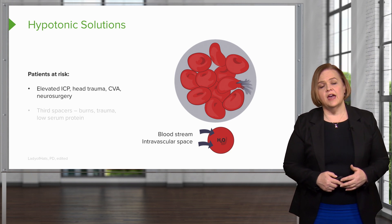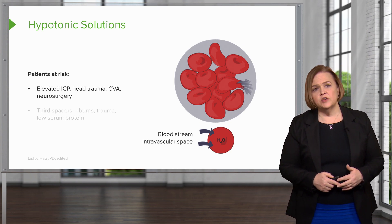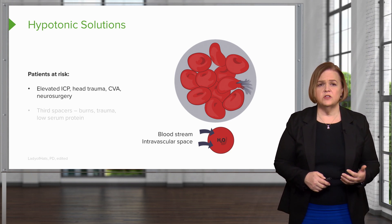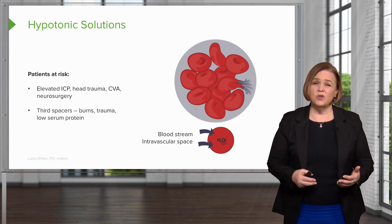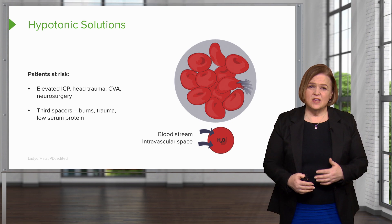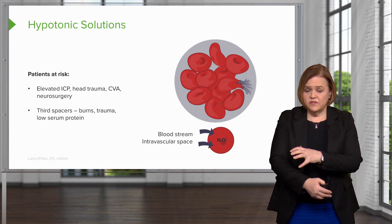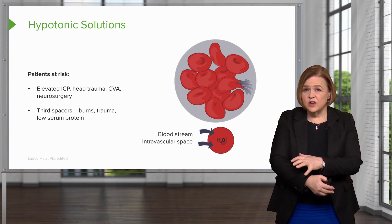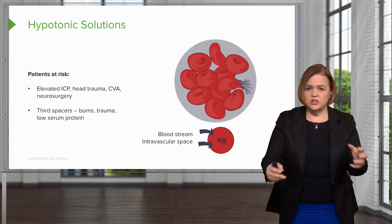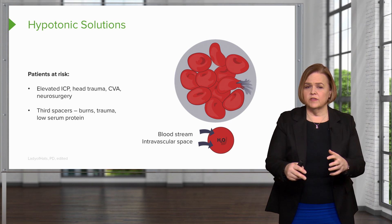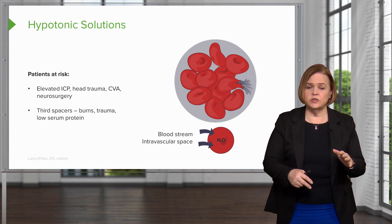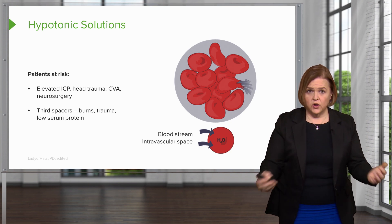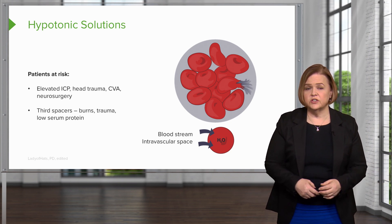People at risk include those with elevated intracranial pressure, people with head traumas, people with strokes, and people who've had neurosurgery. People who are already bad third spacers — someone who's had a burn — because they've had such severe trauma to their body, fluid is shifting all over the place. So we're not going to want to hang a hypotonic solution that's going to further cause that fluid shifting.